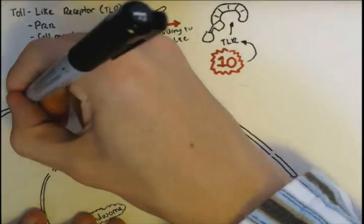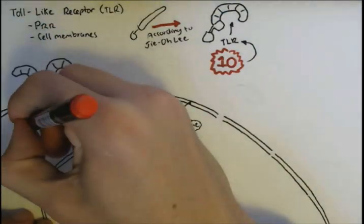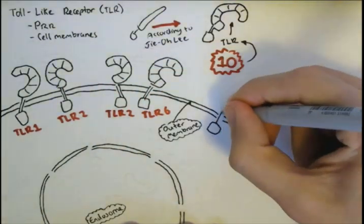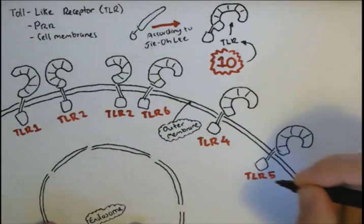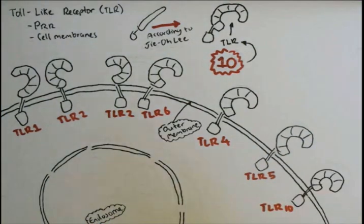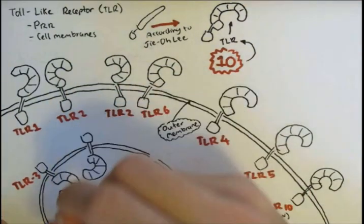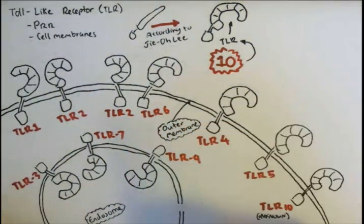On the outer cell membrane, you can find TLR1 and 2, TLRs 2 and 6, TLR4, TLR5, and TLR10, whose function is unknown. On endosomal membranes, TLR3, 7, 8, and 9 can be found.